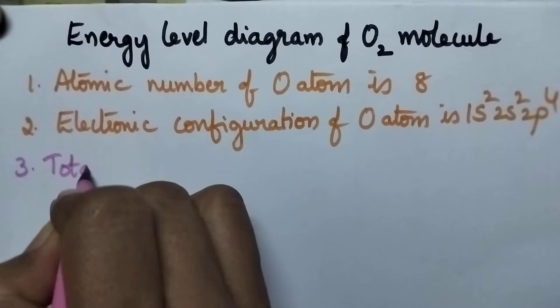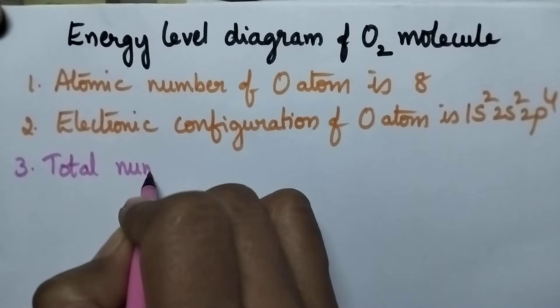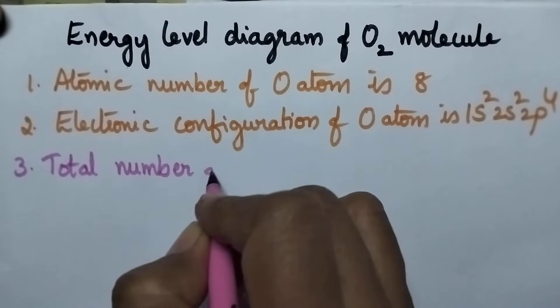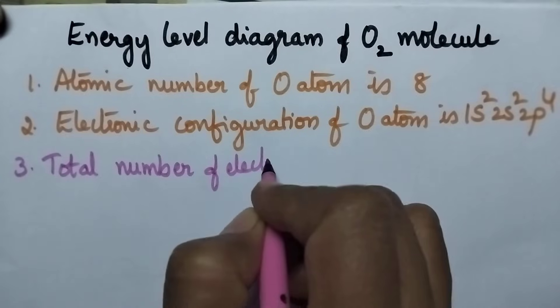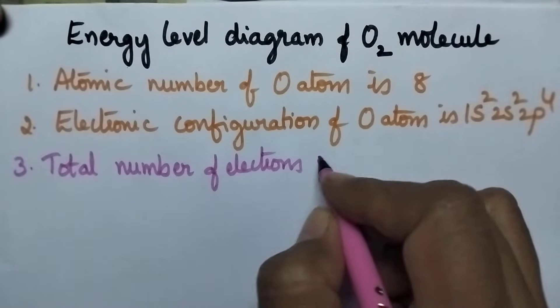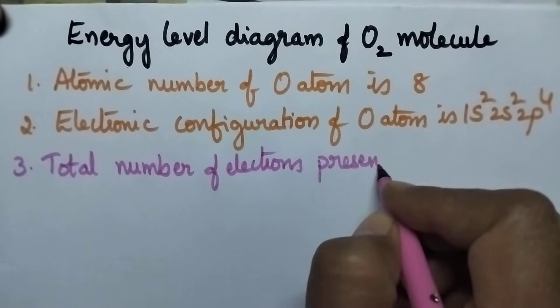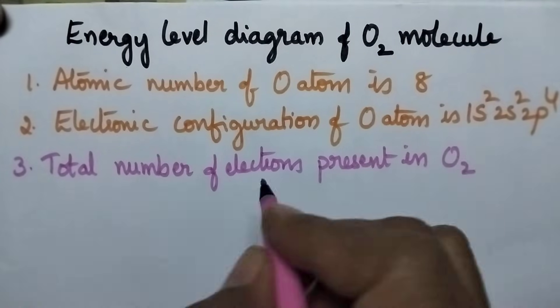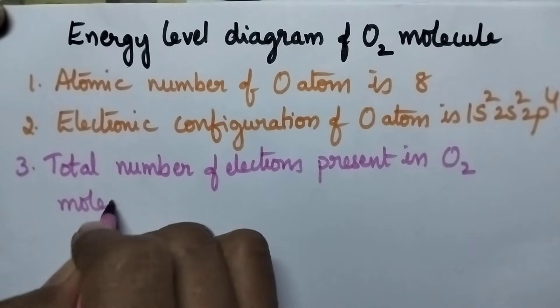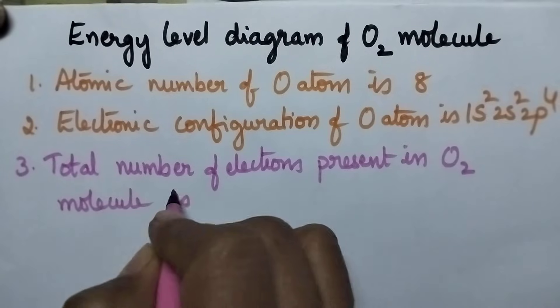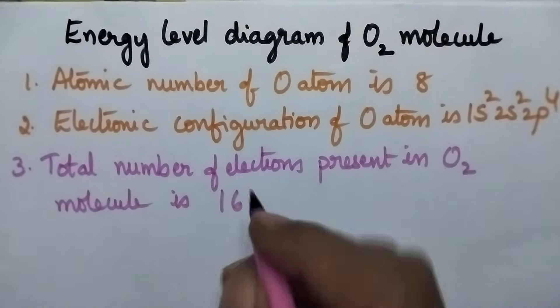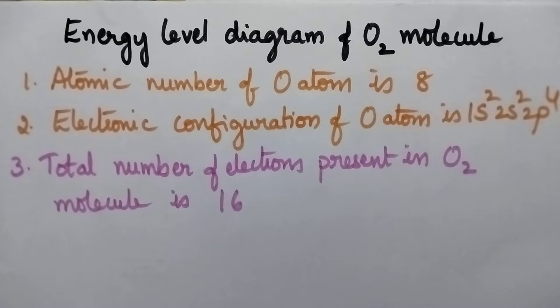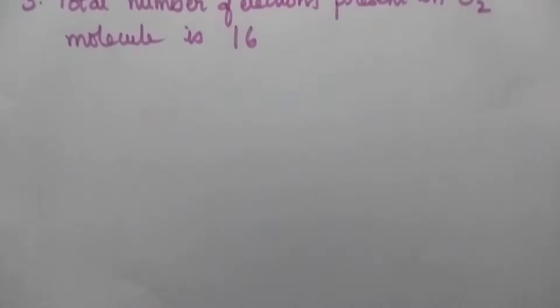The total number of electrons present in the O2 molecule is 16. So let us draw the energy level diagram for the O2 molecule.